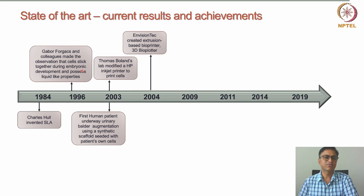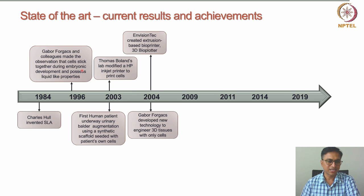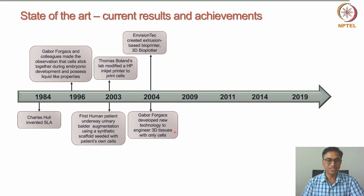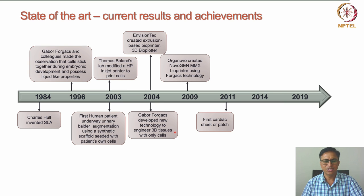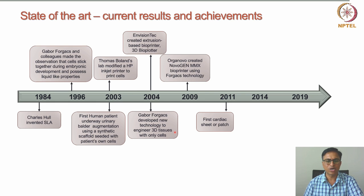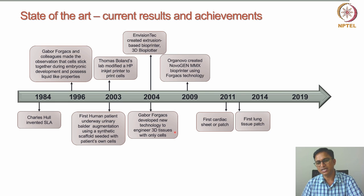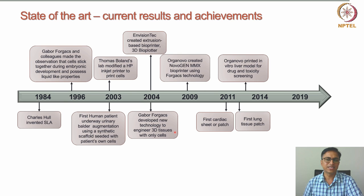In 2004, Envisiontech created their first extrusion-based bioprinter named the 3D Bioplotter. Also in 2004, Dr. Gabor Forgacs, building on his earlier observation that tissues have fluid-like properties, engineered 3D tissue using only cells. Organovo, an American company, then created their first bioprinting technology using Forgacs's technology, named the Novogen MMX bioprinter. Subsequently, a series of advances followed: in 2011, the first cardiac patch was developed, then the first lung tissue patch. Organovo also created an in vitro liver model for drug and toxicity screening, supplying it to pharmaceutical companies to test drug toxicity on the liver.